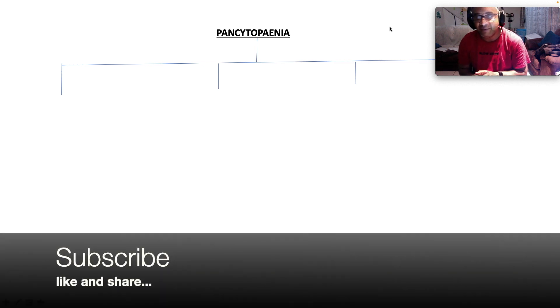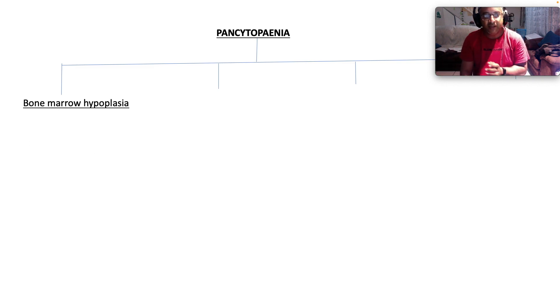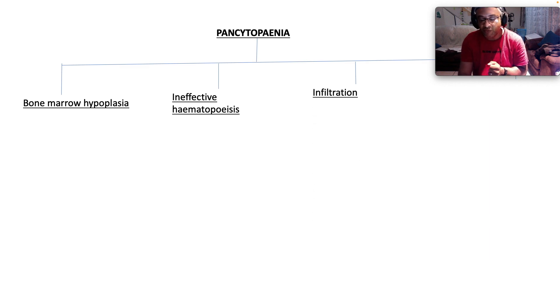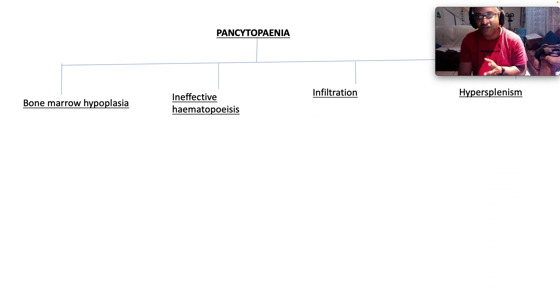The clinical problem of pancytopenia means that you have diminished numbers of all your cell lines — diminished white cells, diminished red cells, diminished platelets. The causes can largely be categorized into bone marrow hypoplasia, ineffective hemopoiesis, infiltration of the bone marrow, or hypersplenism, where there is increased destruction of blood cell elements that are formed.